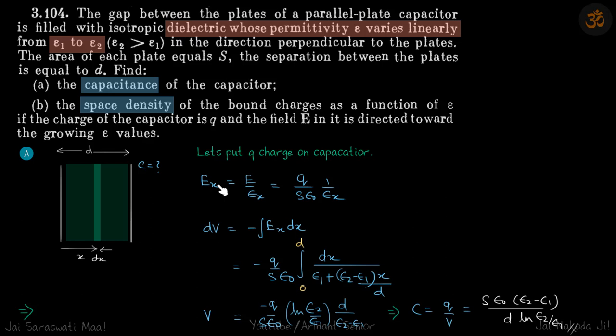At a distance x, the permittivity is epsilon x, so the electric field there will be E divided by epsilon x, where E is the electric field outside the dielectric. Outside the dielectric it is q divided by S times epsilon naught. So the electric field inside at a distance x, where the permittivity is epsilon x, is E divided by epsilon x, where E equals q divided by S times epsilon naught.